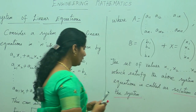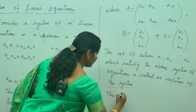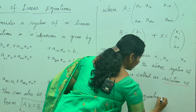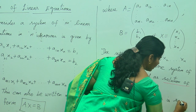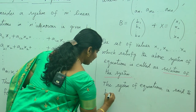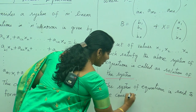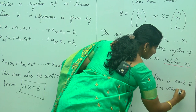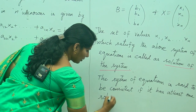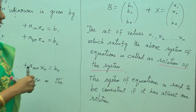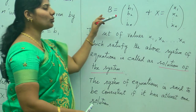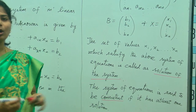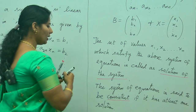The system of equations is said to be consistent if it has at least one solution. When will you say that the system of linear equations is consistent? When you are solving it, you should get at least one solution. Then only we will say that the system is consistent. When it has no solution at all, then we say that it is inconsistent.